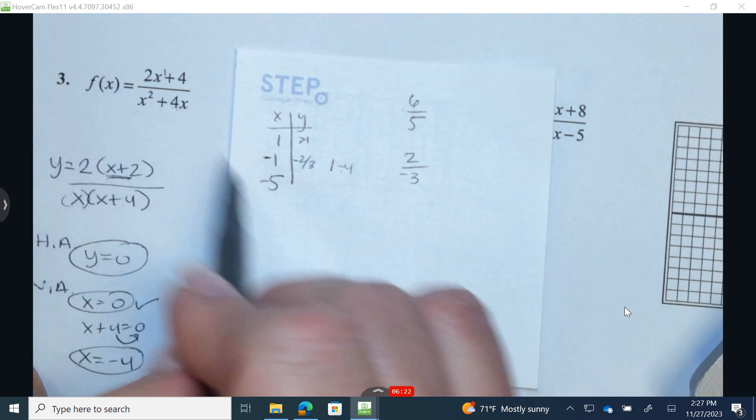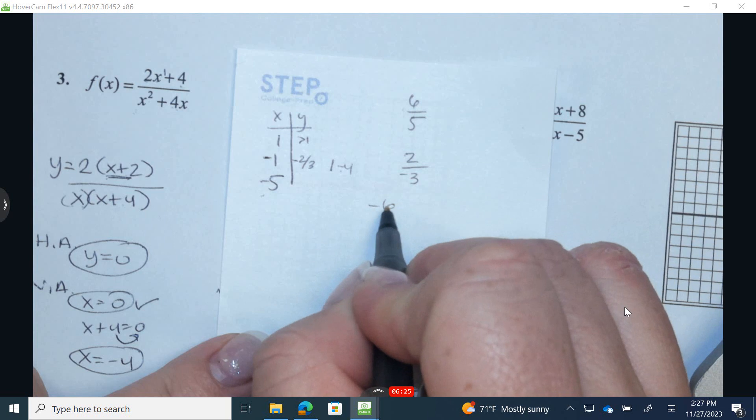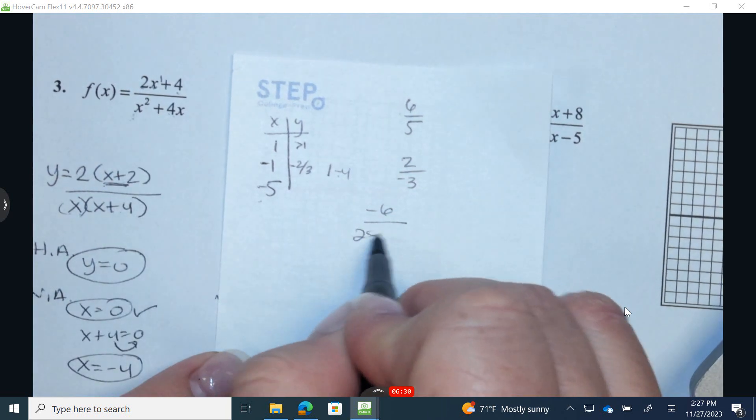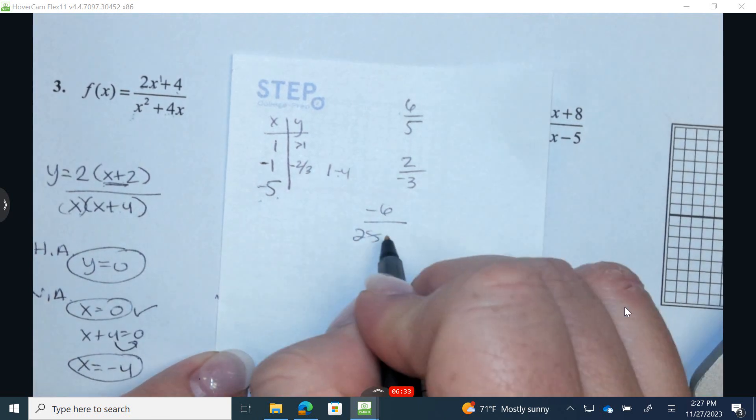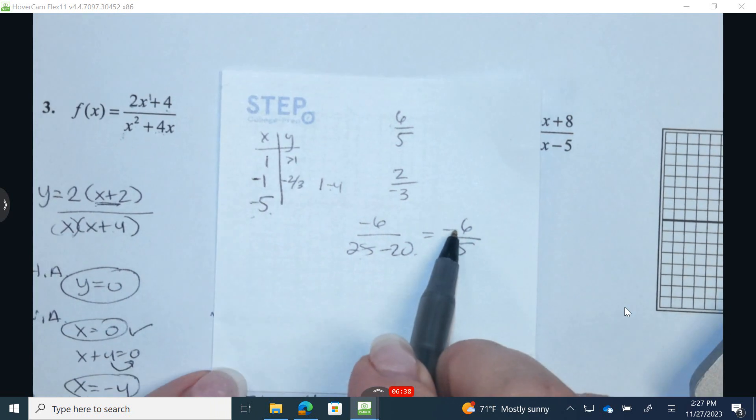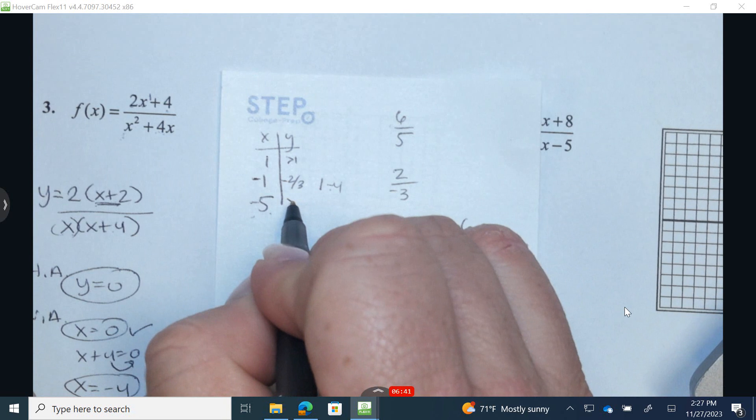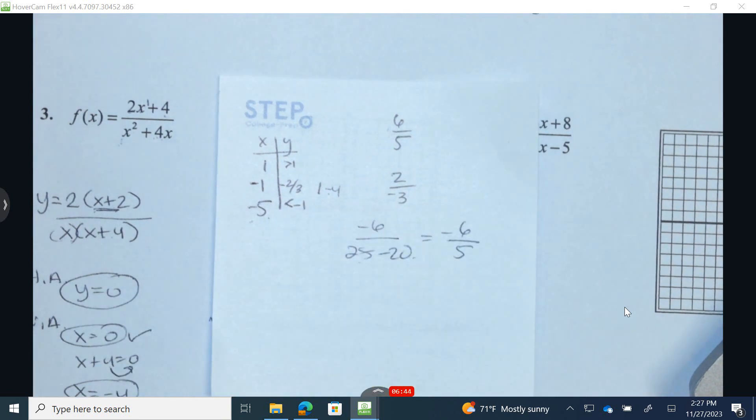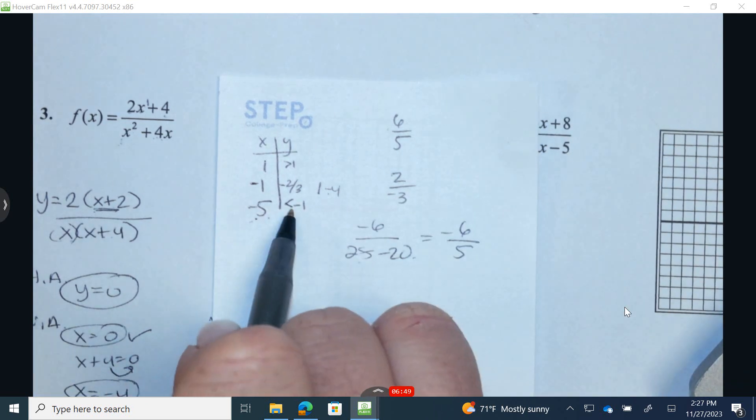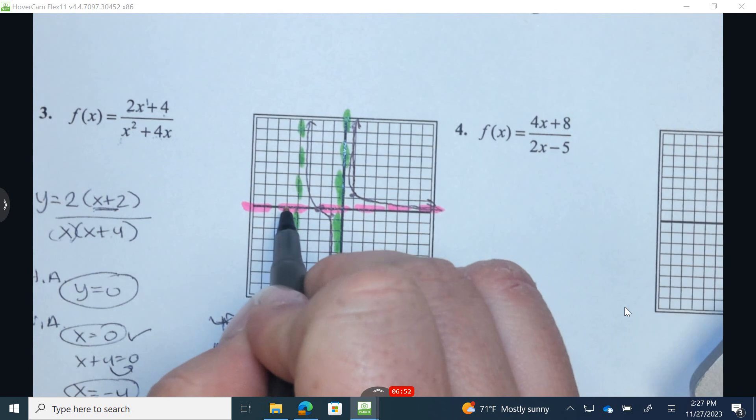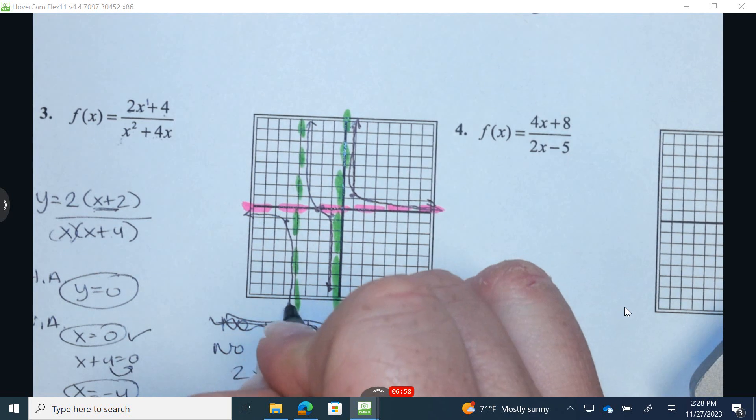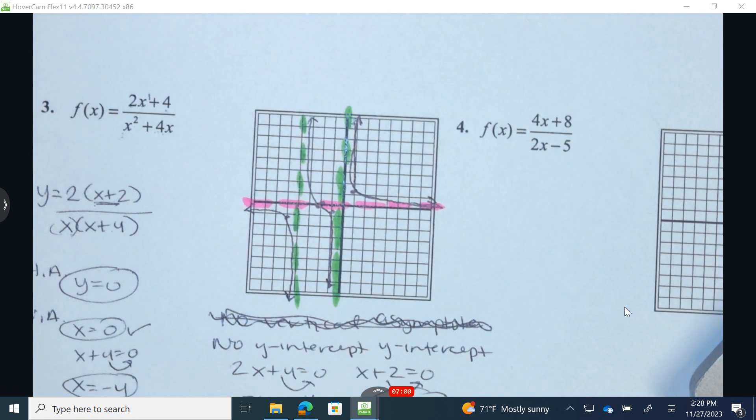2 times negative 5 is negative 10. Negative 10 plus 4 is negative 6. Okay, negative 5 squared is 25. 4 times negative 5 is negative 20. So I have negative 6 over 5. Okay, this is negative a little bit more than 1. So just a little bit less than negative 1. So negative 1.1, negative 1.2 is what my approximation would be. I'm going to go over negative 5 and a little bit lower than negative 1. Over negative 5, a little bit lower than negative 1. It tells me that this portion of the rational function occurs below the x-axis.